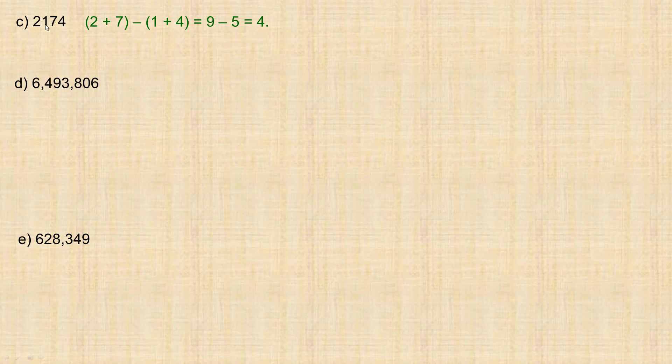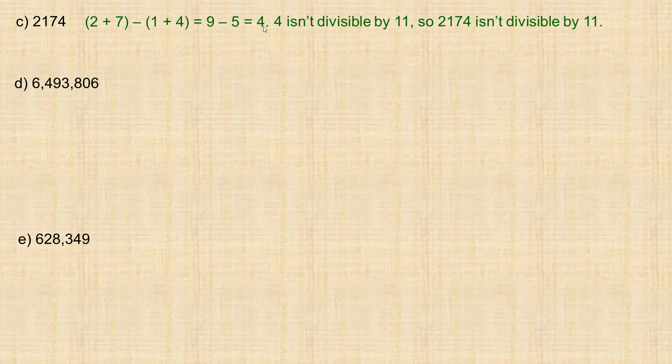Next example: 2174. We add the odd-place digits — 2 and 7 — to get 9, and the even-place digits — 1 and 4 — to get 5. Then 9 minus 5 equals 4. Since 4 is not divisible by 11, 2174 is not divisible by 11.